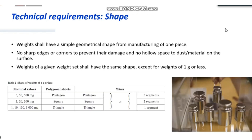Weights shall have a simple geometrical shape from the manufacturer, made of one piece. They shouldn't have sharp edges or corners — this is to prevent damage from sharp edges. There shouldn't be any space to allow dust to deposit on the surface or other materials deposited in a dip on the surface. Weights of a given weight set shall all have the same shape, except for weights of one gram or less, which can be found in table two of the OIML document.